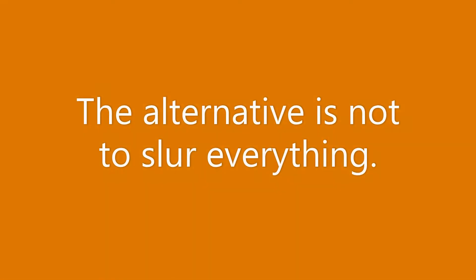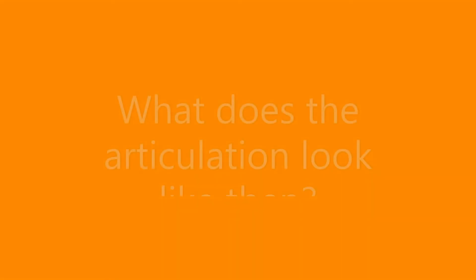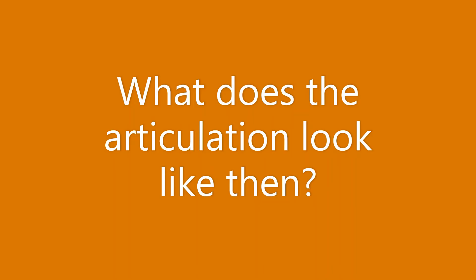The first guiding principle is that we don't want to tongue every single note — that's one very common mistake. Along with that, the alternative is not that we slur every single note either. In general, what we're looking for is a tongue-slur pattern that we might call slur two, slur two in a group of four notes, except that it's offset by one eighth note.